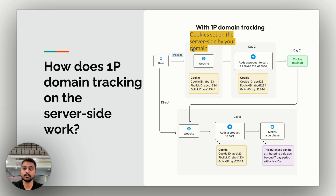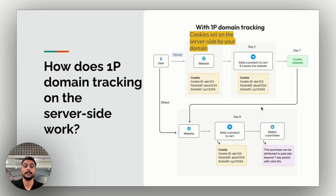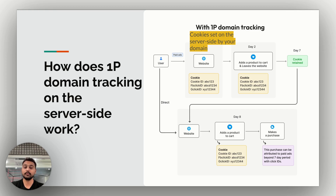From the first user visit, cookies are set by your domain and throughout the entire journey — even after the seventh day — the cookie is retained. If on the eighth day the user directly visits the website, they are not treated as a new user but are mapped with details from their first visit. The journey is continuous, seamless, and cohesive. Purchases beyond seven days can be accurately attributed back to ad platforms with click IDs when using server-side 1P domain tracking.